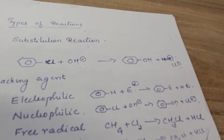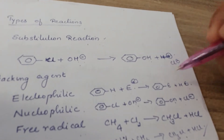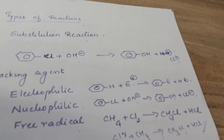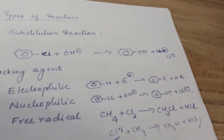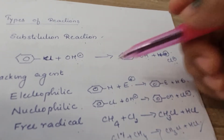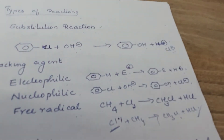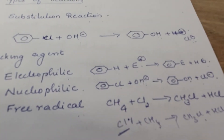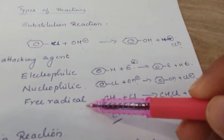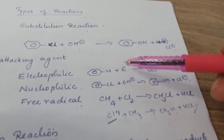Substitution is a type of reaction where one group occupies the place of another and that group is released. The attacking reagent determines the type: if it is an electrophile, we have electrophilic substitution; if it is a nucleophile, it is nucleophilic substitution; if it is a free radical, we have free radical substitution.